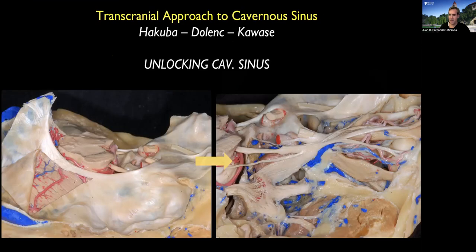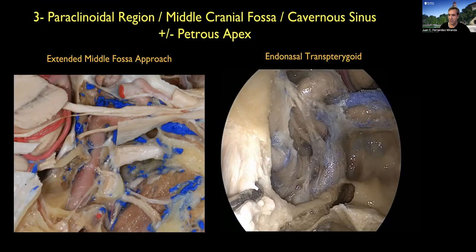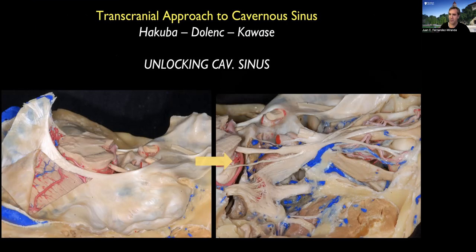I must say that I also use the endonasal transsphenoidal approach frequently, but that is mostly for chondroid lesions, while the extended middle fossa approach is mostly for meningiomas and other tumors. The key anatomical concept here is knowing how to unlock the cavernous sinus — how to go from a picture where the dura of the temporal lobe is all covered, to one where you have all the cranial nerves of the skull base exposed and the clinoidal corridor exposed.